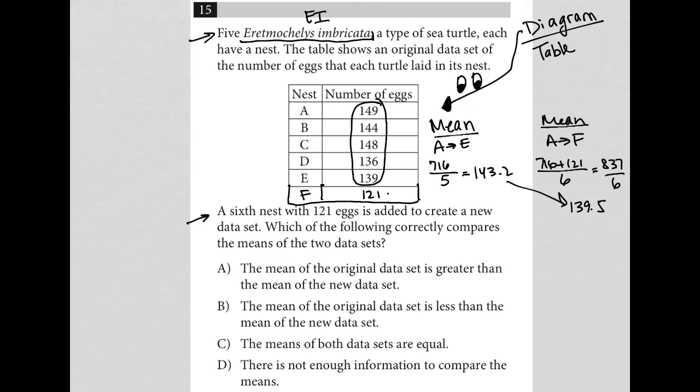So choice A says the mean of the original data, 143.2, is greater than the mean of the new data set, 139.5. Yeah, that's absolutely true, right? And I mean, there's no way to disprove that. So A must be the best answer.